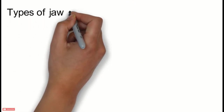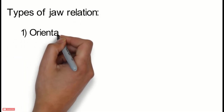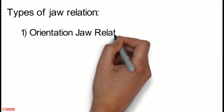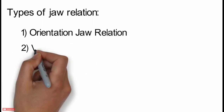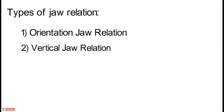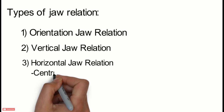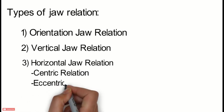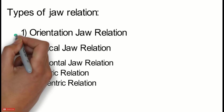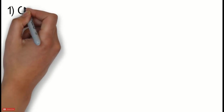Now let's start with the different types of jaw relations. First is the orientation jaw relation, then the vertical jaw relation, and third is the horizontal jaw relation. Under horizontal jaw relation there are two types: centric relation and eccentric relation. Today we will discuss about orientation jaw relation. Vertical jaw relation and centric relation will be covered in our next video.